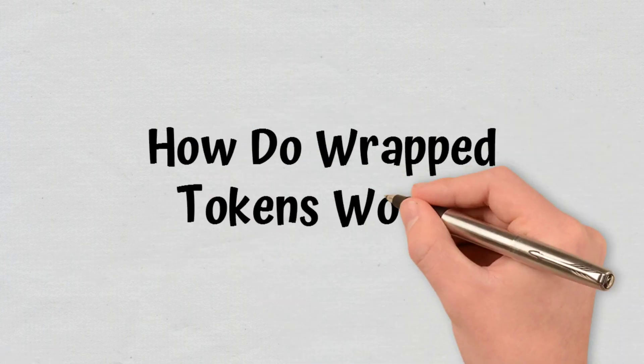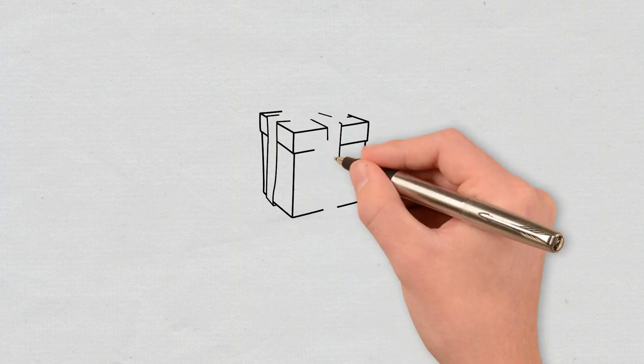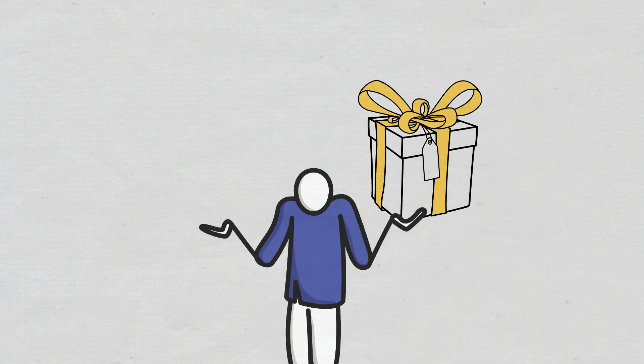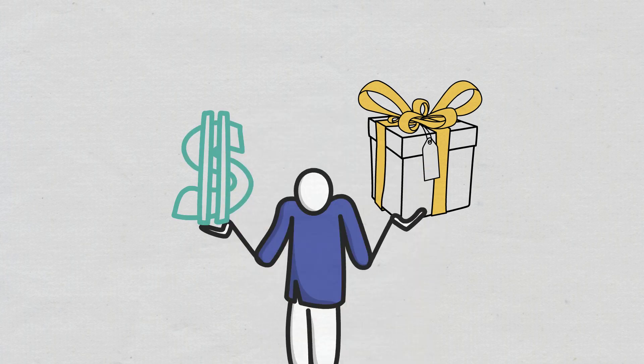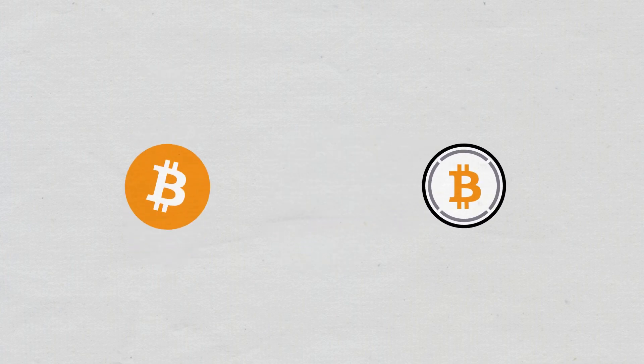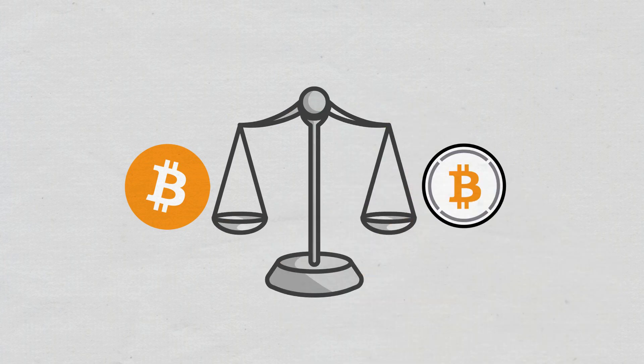How do wrapped tokens work? Such tokens usually require a custodian. This entity holds an equivalent amount of the cryptocurrency to be wrapped. Let's take wrapped Bitcoin. The custodian needs to hold 1 Bitcoin for every minted WBTC.